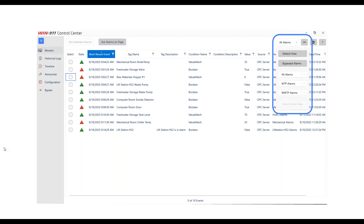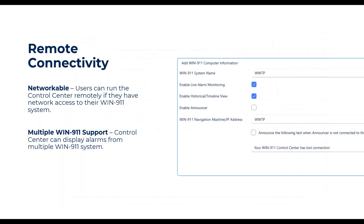Because we changed the way we're displaying alarms, it really opens us up to network or remote connectivity to other WIN-911 systems. If I have multiple WIN-911 systems on my network, I can connect to those and view them all in a single Control Center. So rather than having to jump around from machine to machine, you can just add those systems into your Control Center.